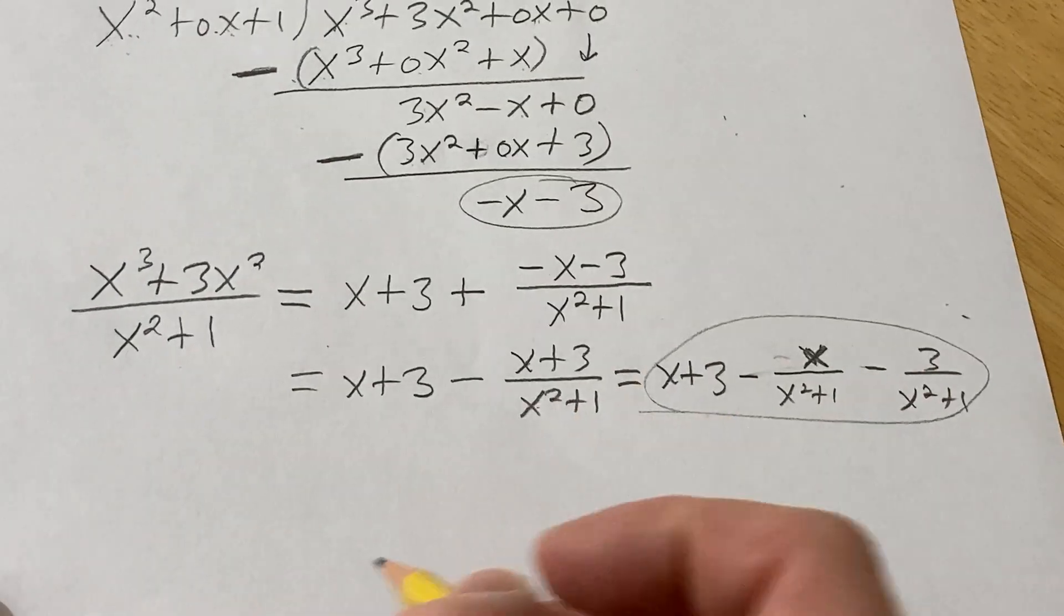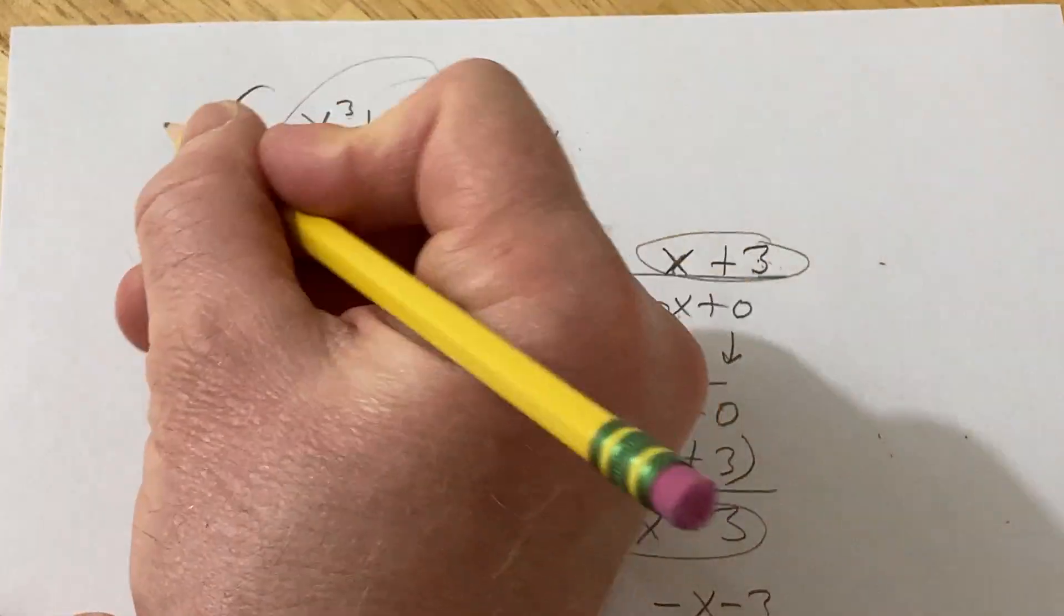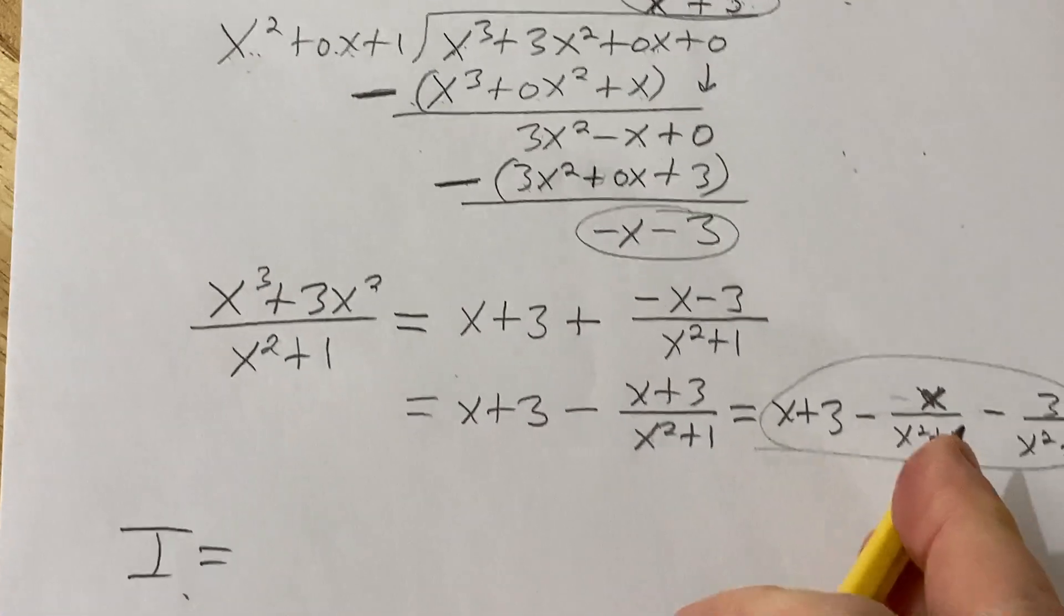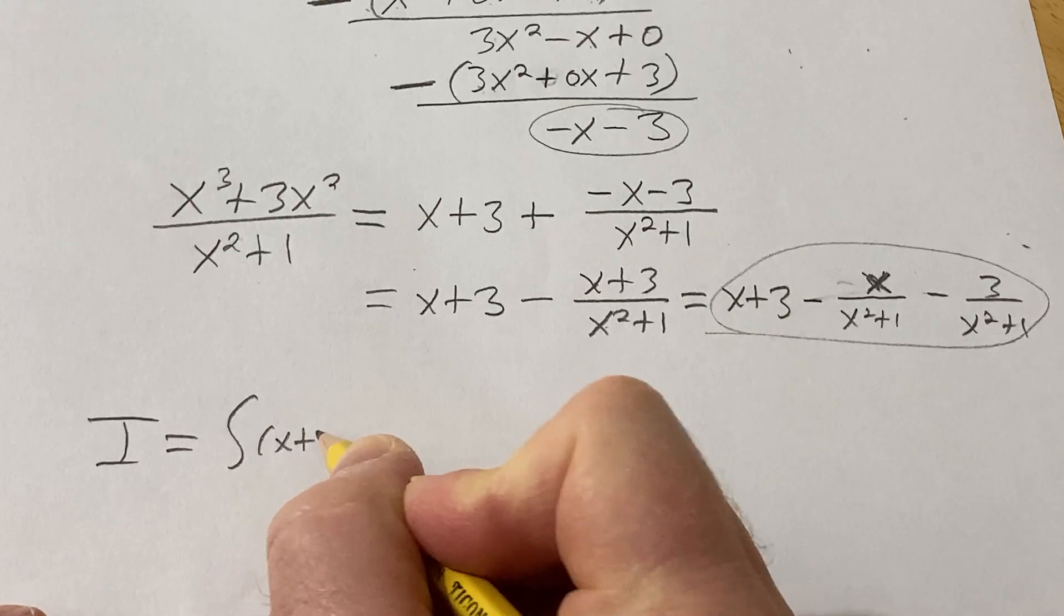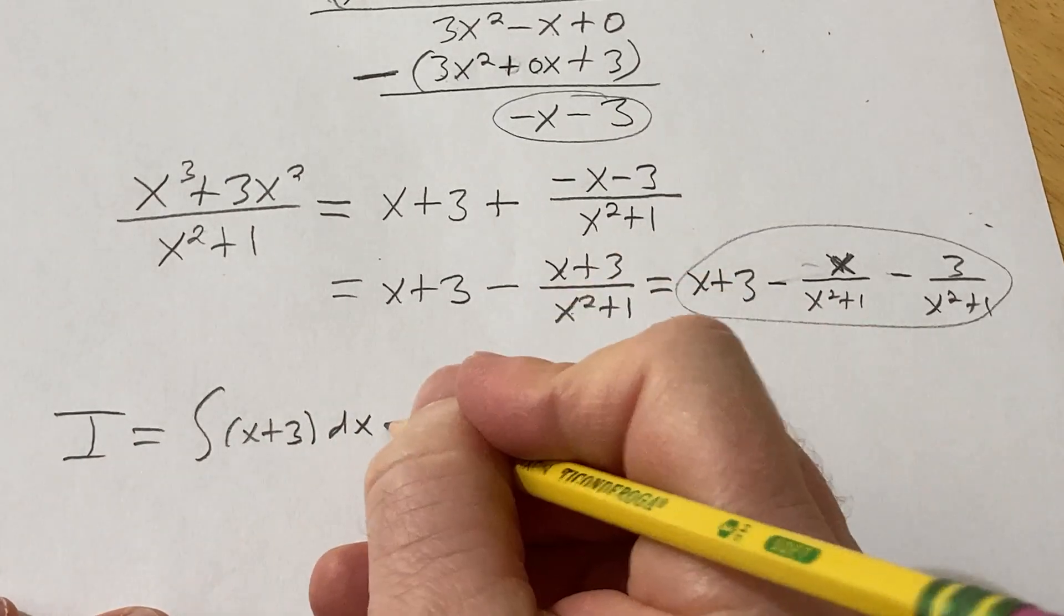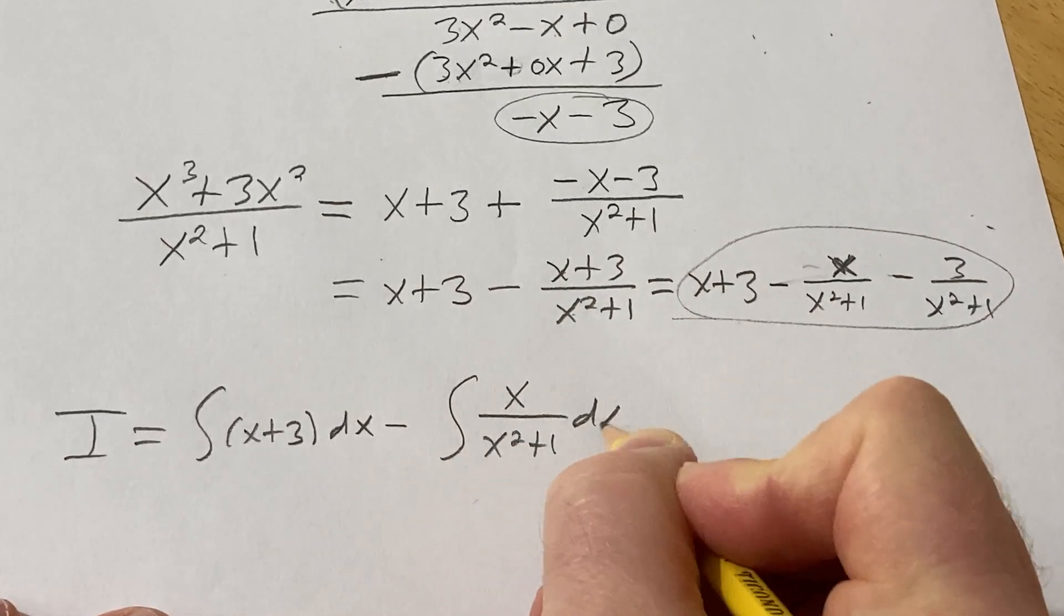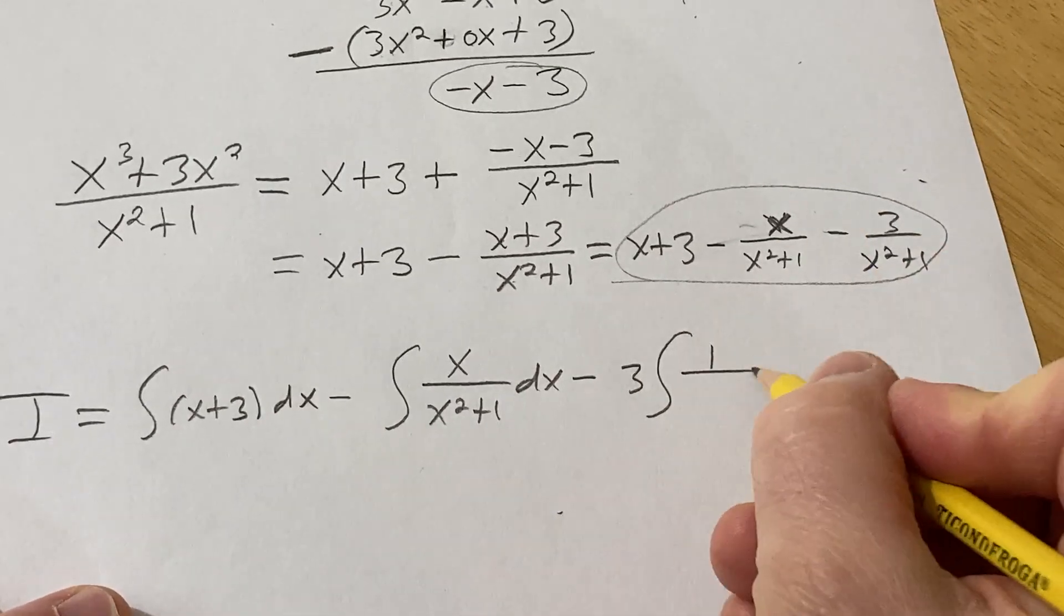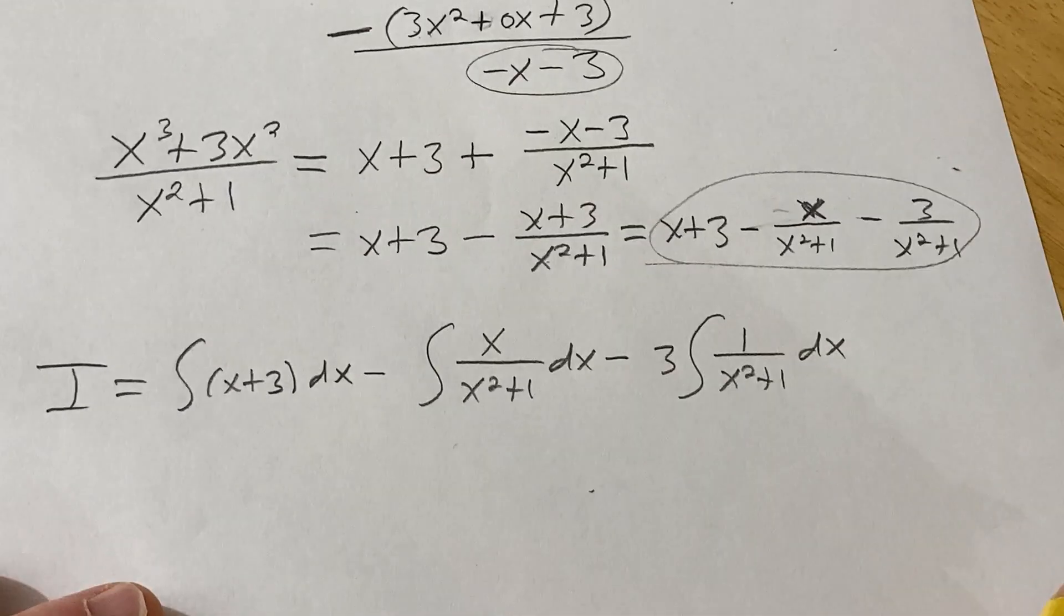So now we're going to integrate this because this is what we started with. So if you give this a name, I'll call it i for integral. So now i is going to be equal to the integral of x plus 3 with respect to x. That's pretty easy. Minus the integral of this. Minus, I'll pull the 3 out, the integral of this. So now we can just do each of these.